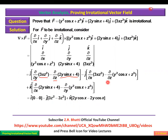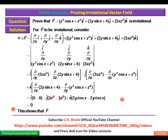Now we observe the cancellations: 3z² − 3z² = 0, and 2y cos x − 2y cos x = 0. Everything cancels, so del × F = 0. Therefore, curl of F equals zero, and we have proved that F is irrotational.